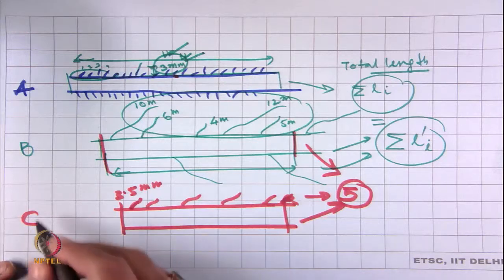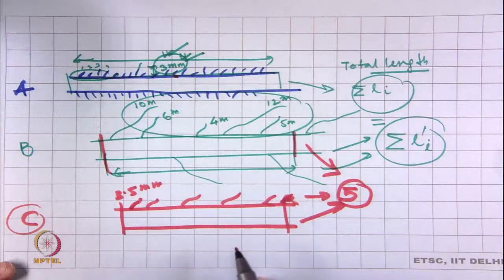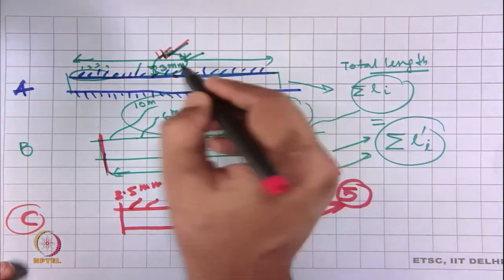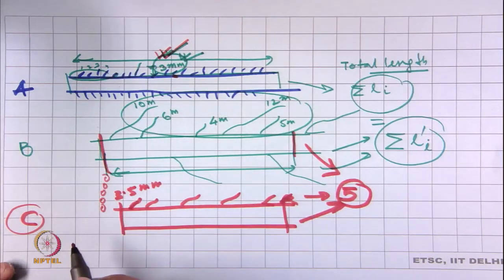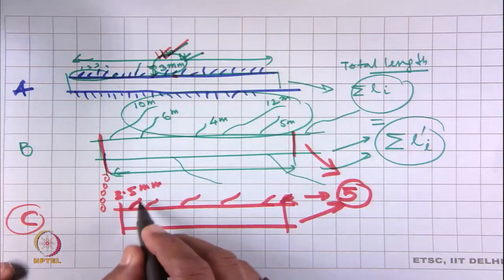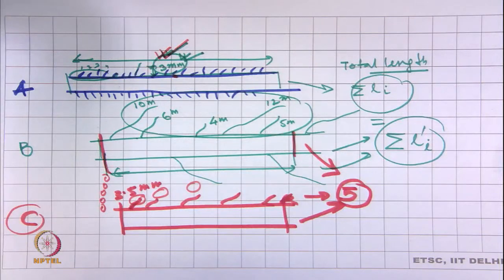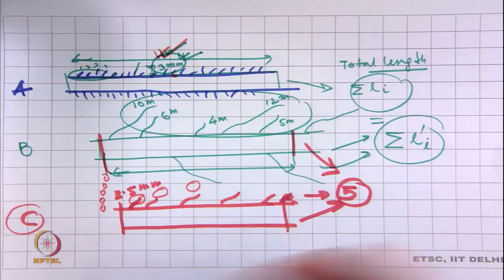This problem can be solved to some extent by using multiple sensors rather than just one, which will give an idea about the length distribution — the distribution of hair lengths. For example: how many hairs are beyond 3 mm, how many are between 3 and 4 mm, and so on — giving a detailed picture.